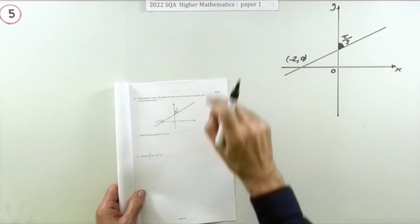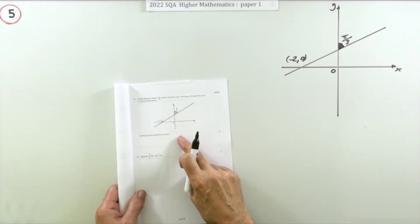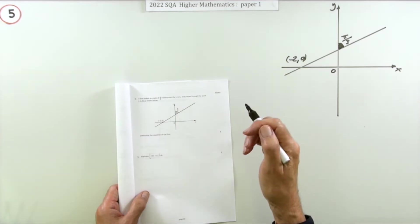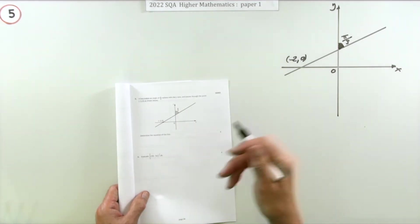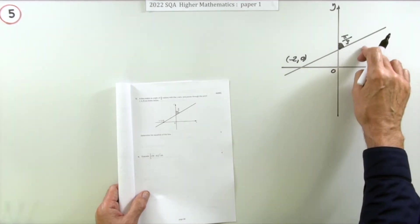Question 5 from the 2022 Higher Maths paper 1, a 3 mark question: determine the equation of a line. To get the equation of a line you need a point on it and its gradient. You might get the gradient from two points, but in this case you're going to get the gradient from the angle it makes.